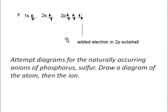The orbital diagram for fluorine looks like this: 1s, 2s, and a filled 2p subshell. Here is the added electron.